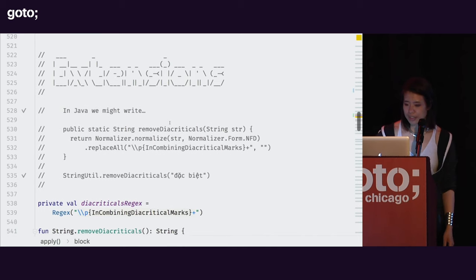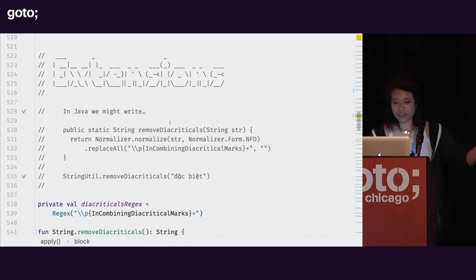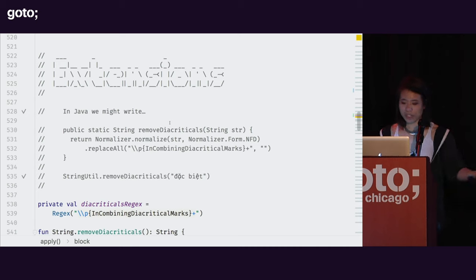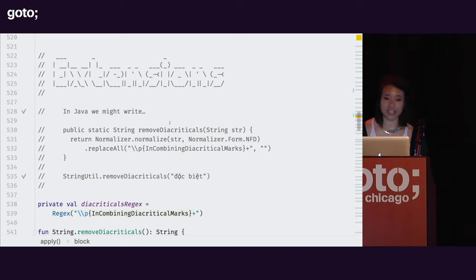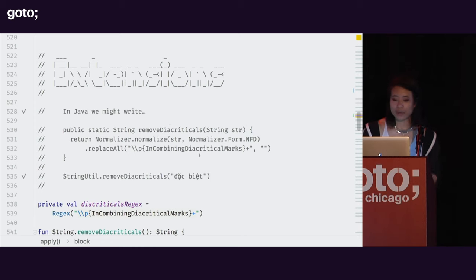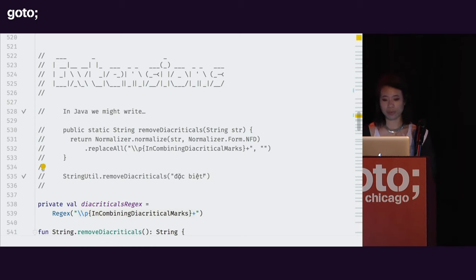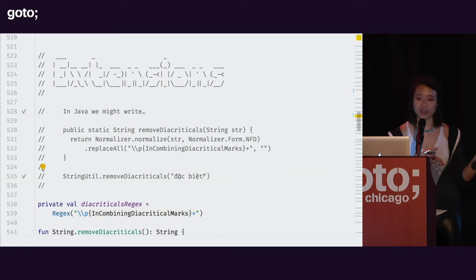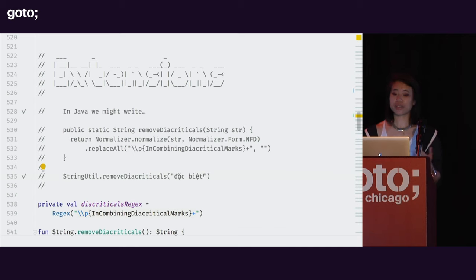Extension functions. If you're from a JVM background, you might have written maybe thousands of string utilities in your life. I know I have — and this is actually one I wrote for work. It basically strips out diacriticals, which you can think of as accent marks. I wrote a function that uses some regex magic to strip out accent marks from localized text to make search easier.